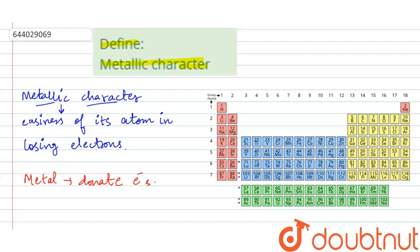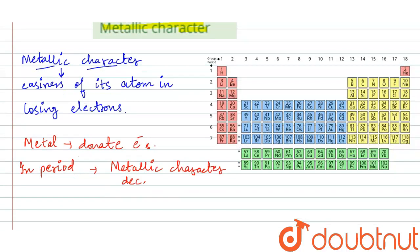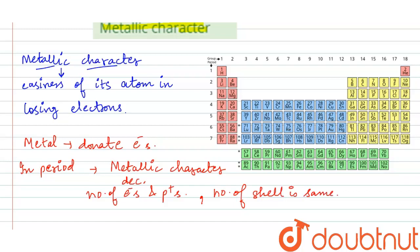Moving in a period from left to right, metallic character decreases. This is because in a particular period, the number of electrons and protons increases, but the number of shells remains the same.